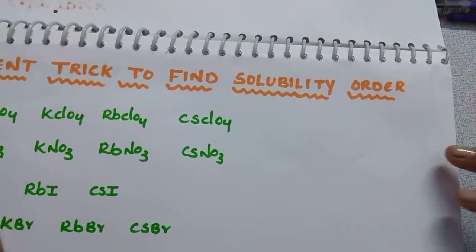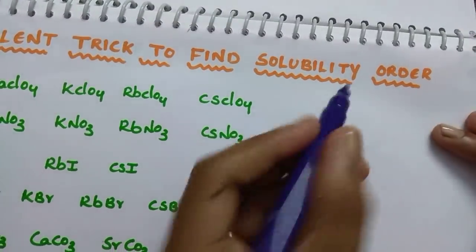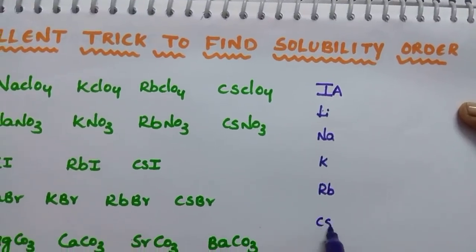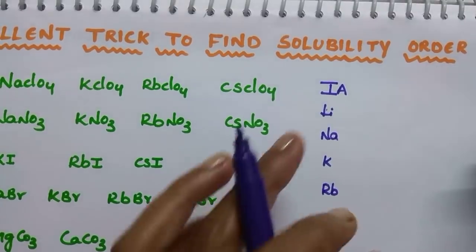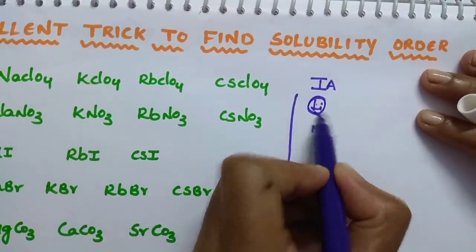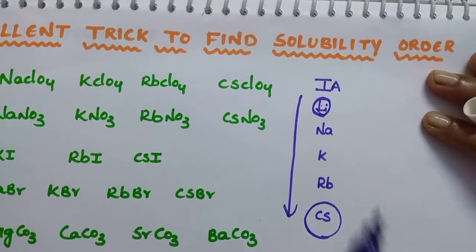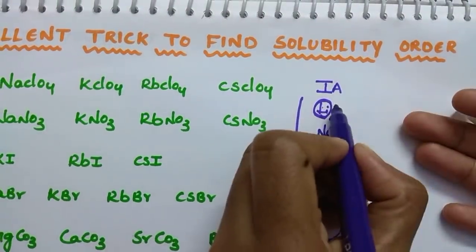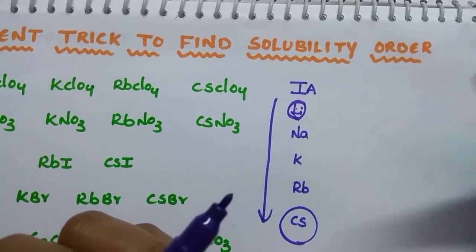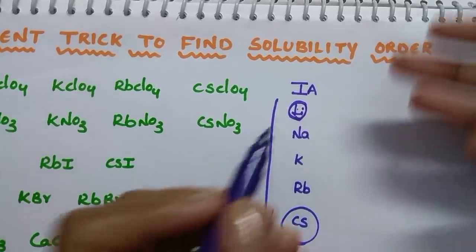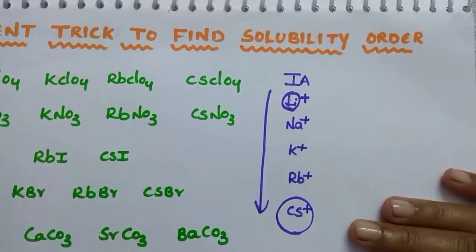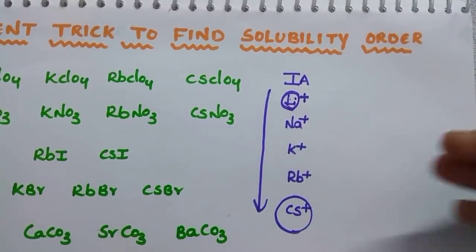Before starting the questions, let me tell you a few things. In Group 1A elements — lithium, sodium, potassium, rubidium, cesium — from top to bottom in a group the size of the atom increases. Lithium has the smallest size and cesium has the largest size. Group 1A elements have a common oxidation state of +1, because they have one electron in the valence shell. They lose that electron to achieve noble gas configuration, exhibiting +1 oxidation state.